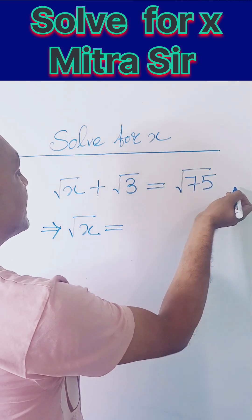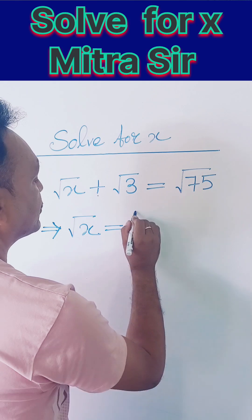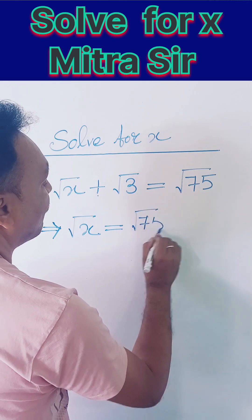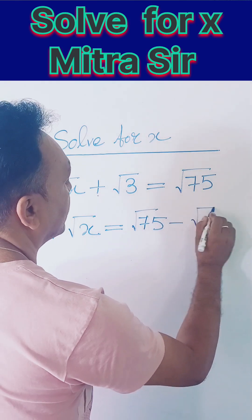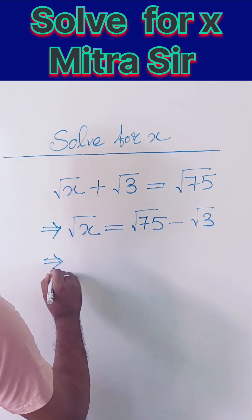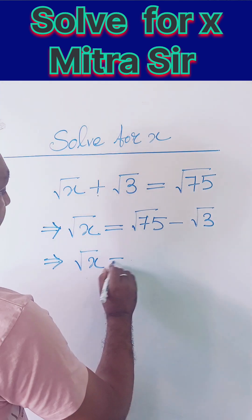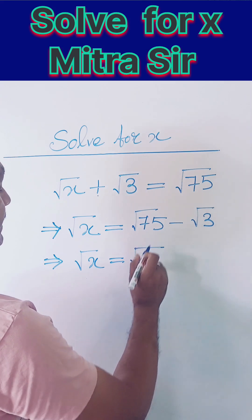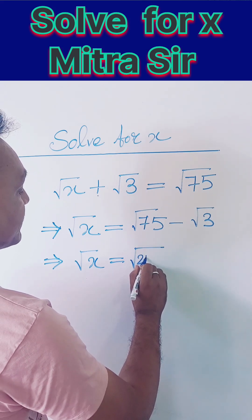So the sign will be changed - it is plus, but if we change sides it will be minus. So √75 minus √3. I'll apply the transposition property of mathematics, nothing else.